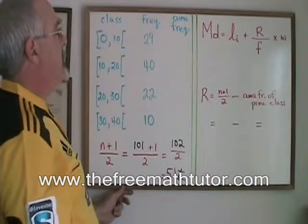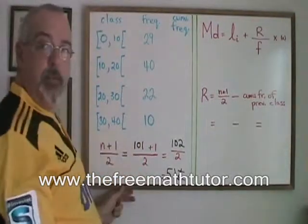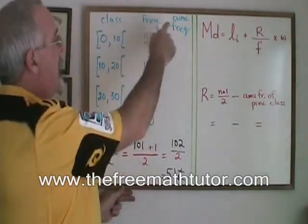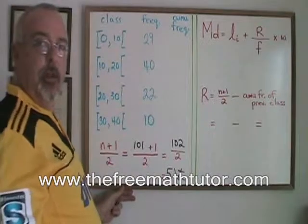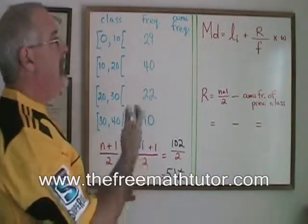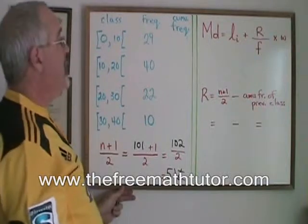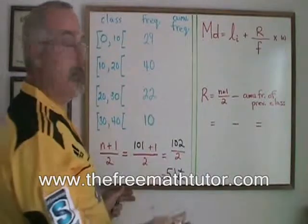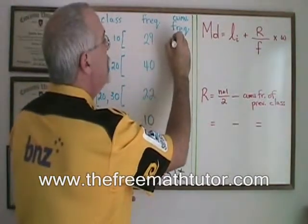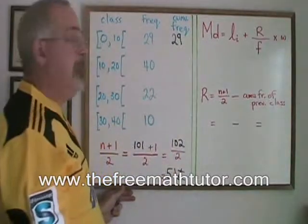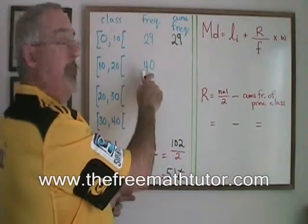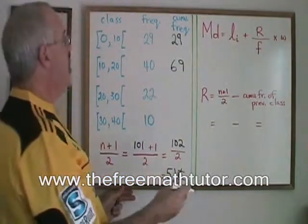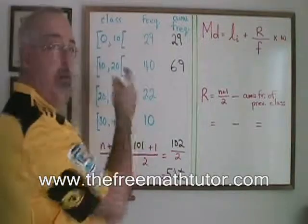The next thing that we want to do is figure out which of these classes our median falls into. One of the things we can do to make this easier is add a column to our table that is the cumulative frequency. It just means the frequency of data that has been collected so far up to that point in the table. So in the first class there are 29 couples surveyed and found within this class. The cumulative frequency, the total that we have so far is 29. But if we add the 40 from the second class, our cumulative frequency becomes 69. There are 69 couples who have been married between 0 and 20 years. That's what that means.